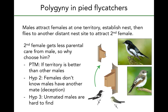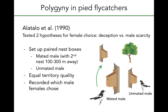They were really interested in distinguishing between the deception and male scarcity hypotheses. They set up their experiment with two nest boxes that were empty and in relatively close proximity to one another, so females could choose between them. One belonged to a male who had already mated and had a nest box with another female 100 to 300 meters away — so even though this nest box was empty, he was already mated. The other nest box had a truly unmated male with no other females. They had replicates of these pairings and recorded which male females chose over the mating season.